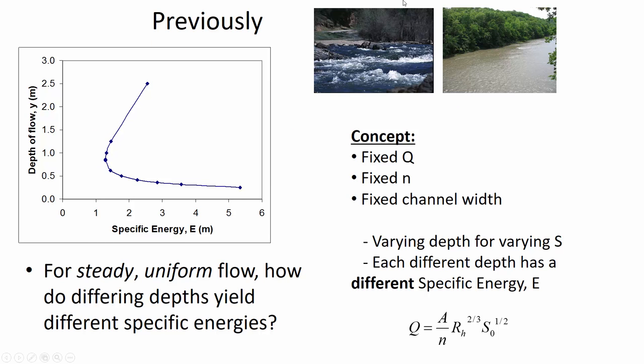The fun continues with the specific energy diagram. Remember what it shows us: there are alternate depths. For a certain amount of specific energy, a vertical line can intersect the curve at two different depths that have the same energy. The point of minimum specific energy corresponds to the critical depth. Any depth greater than the critical depth corresponds to subcritical flow, and any depth less than the critical depth is supercritical flow.